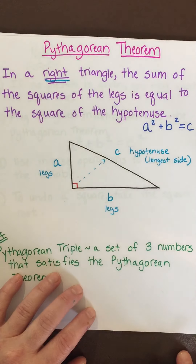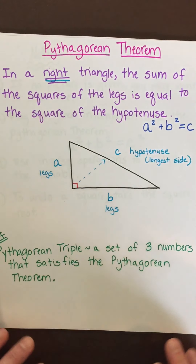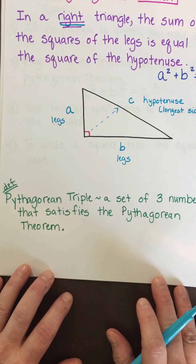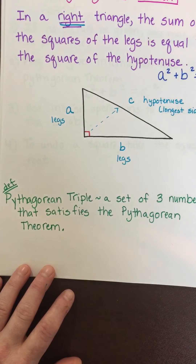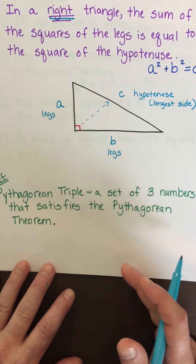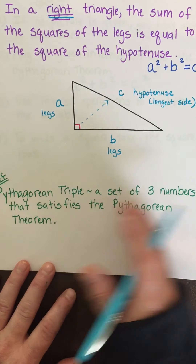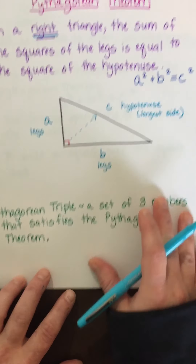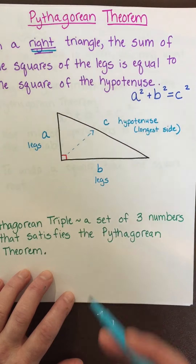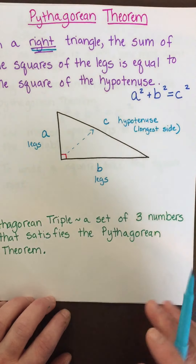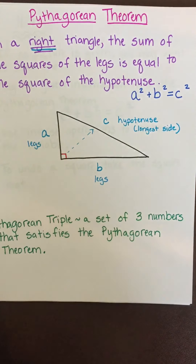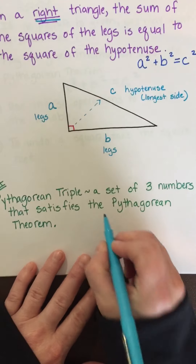You can only use the Pythagorean theorem in a right triangle. Another definition to know is a Pythagorean triple — it's a set of three numbers or side lengths that satisfy the Pythagorean theorem. That means if you take those three numbers and plug them into a squared plus b squared equals c squared, you get a true statement. The biggest number is always what you plug in for c.